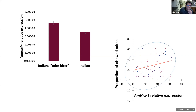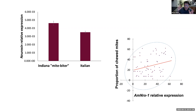A recent open-access publication covers the grooming behavior and gene expression of the Indiana mite biter honey bee stock. Indiana mite biters have fewer mites than Italians. The proportion of chewed mites was also higher. The gene expression of Norexin-1, for example, is elevated in bees that are grooming more and biting more — there's a synaptic response in the brain of the honeybee. It was higher in those bees that were grooming more, and there was also a correlation to the percent of chewed mites.